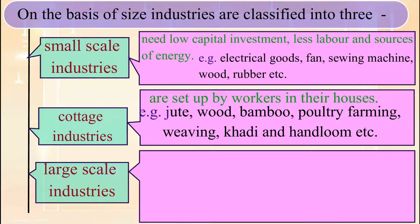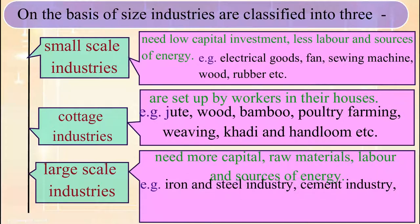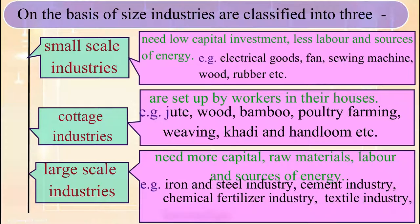Large scale industries need more capital, more raw materials, more labor, and sources of energy. For example, iron and steel industry, cement industry, chemical fertilizer industry, textile industry, locomotives industry, etc.